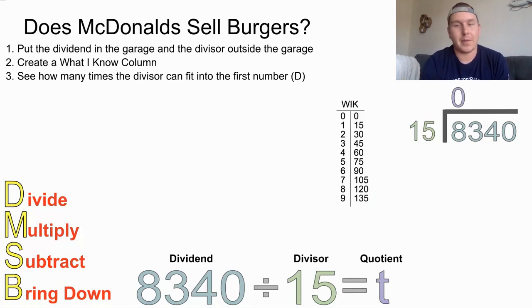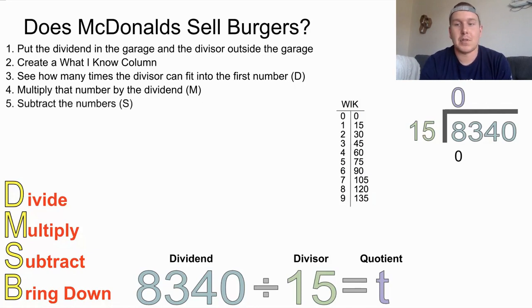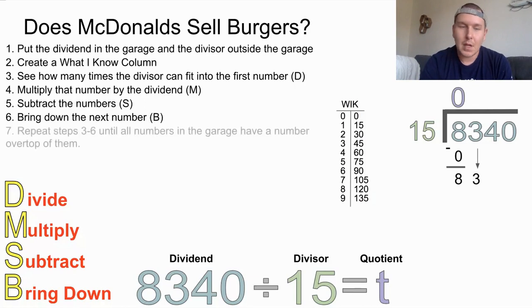The next step is to multiply that number by the divisor. So we're going to multiply 0 times 15, which would give us 0. And that is the multiply step. Then the next step is subtract the numbers. So we're going to take 8 and 0, and we're going to subtract them, which, of course, will give us 8. Then the next step is to bring down the next number. So we're going to take that 3, and we're going to bring it down.